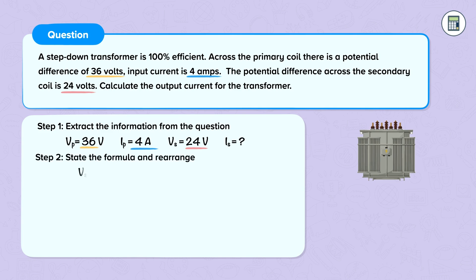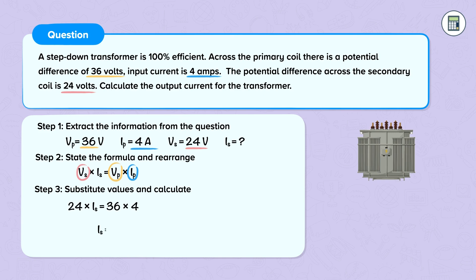And we're trying to calculate the current across the secondary coil. Step 2: we state the formula and rearrange. Potential difference across the secondary coil multiplied by the current across the secondary coil is equal to the potential difference across the primary coil multiplied by the current in the primary coil. We substitute the values and calculate: 24 multiplied by the current in the secondary coil equals 36 times 4. Rearranging gives the current in the secondary coil equal to 36 multiplied by 4 divided by 24, which gives us an answer of 6 amps.